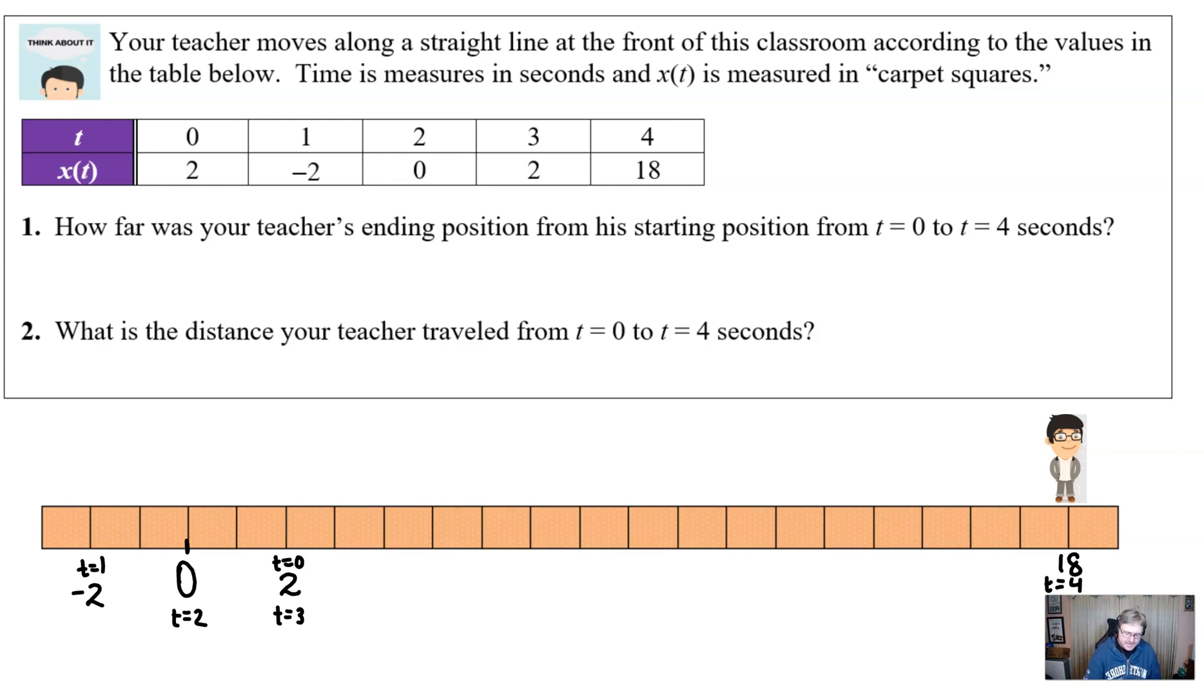So the first question. How far was your teacher's ending position from the starting position? Well, if you take the starting position to the ending position 18, and you find out how far is it from there to there, the answer is simply 16 squares. And you can get that by simply subtracting 18 minus two.